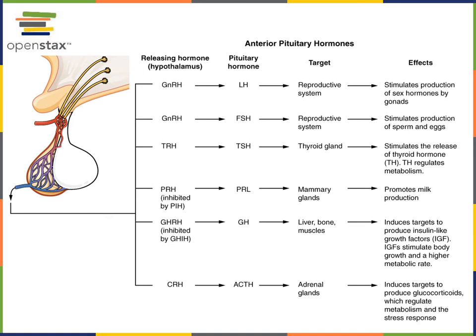Another tropic hormone is follicle stimulating hormone. Follicle stimulating hormone stimulates the reproductive organs, leading to the stimulation of egg maturation and the production of the sex hormone estrogen in women. In men, it stimulates sperm production.